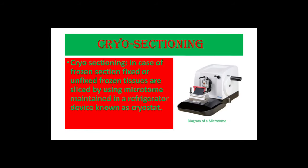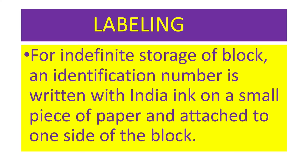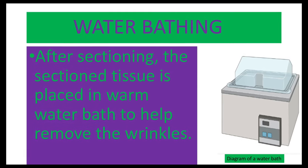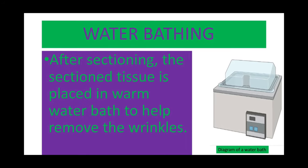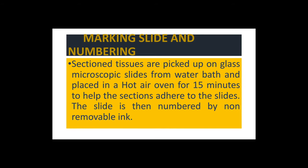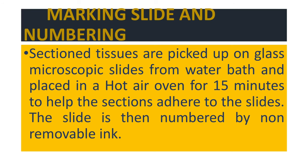The next stage is labeling. For indefinite storage, an identification number is written with Indian ink on a small piece of paper and attached to one side of the block. After sectioning, the tissue section is placed in a warm water bath to help remove wrinkles. Sections are then picked up on glass microscope slides from the water bath and placed in a hot air oven for 15 minutes to help them adhere to the slides. The slide is then numbered with non-removable ink.